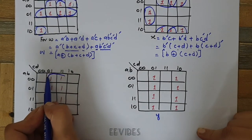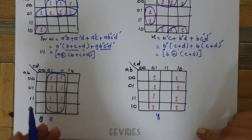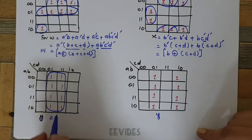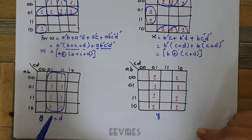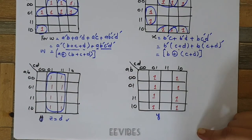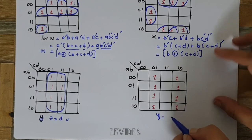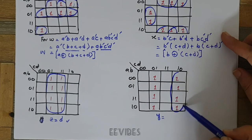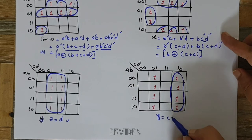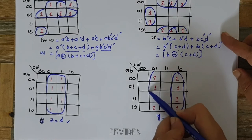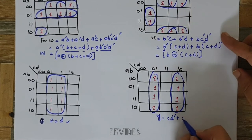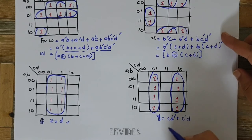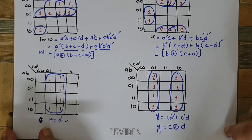For Z, the eight ones in the K-map are all adjacent and merge into a single group, so the function of Z is simply dependent on the last input D — that is, Z = D. For Y, four adjacent ones in the column are merged, giving C·D-complement + C-complement·D, which is the XOR of C and D. So Y = C XOR D.